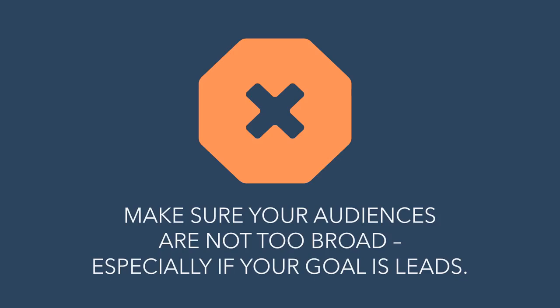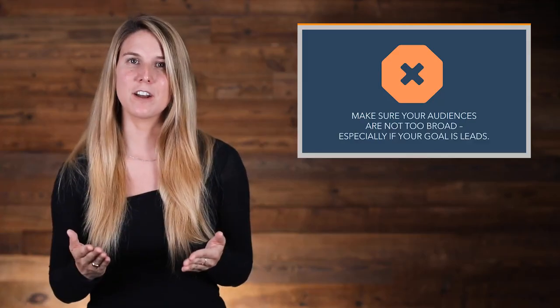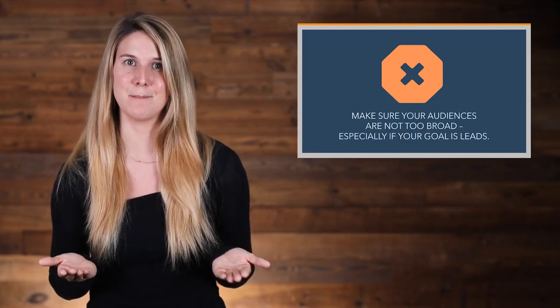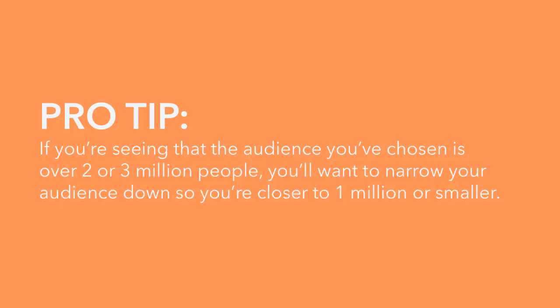As you're creating these audiences, it's really important to make sure that your audiences are not too broad, especially if your goal is leads. Broad audiences are best for large-scale brand awareness campaigns, not lead gen campaigns. If you're seeing that the audience you've chosen is over 2 or 3 million people, you're going to want to narrow your audience down so that you're closer to 1 million tops or smaller. There will be certain cases, like with retargeting or in smaller geo-targeted campaigns, where your ideal audience will be a good deal smaller than that. To narrow down a saved audience, all you have to do is add more detailed targeting to what you already have. To narrow down a custom audience or a lookalike audience, add extra targeting parameters like specific interests.